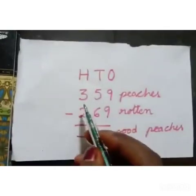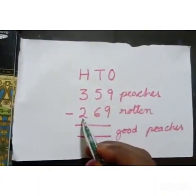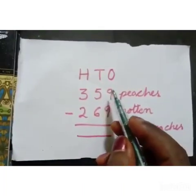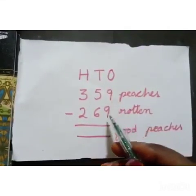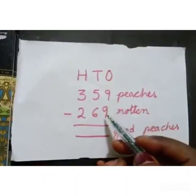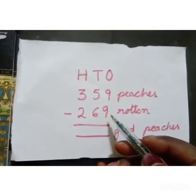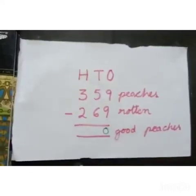See the numbers: 359 minus 269. Come to the ones place. The numbers are 9 and 9. So 9 minus 9 — counting back from 9: 8, 7, 6, 5, 4, 3, 2, 1, 0. In the ones place, write 0. Then come to the tens place.